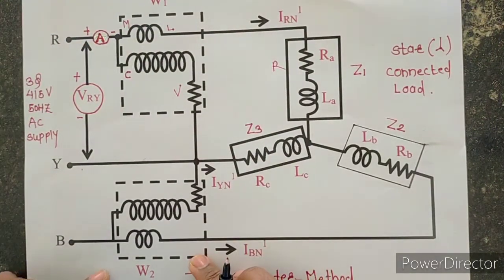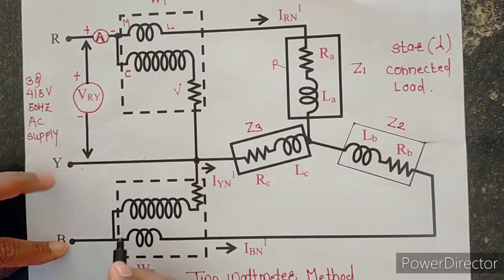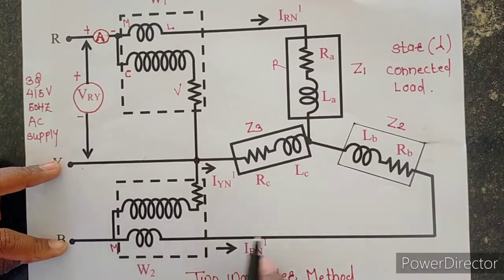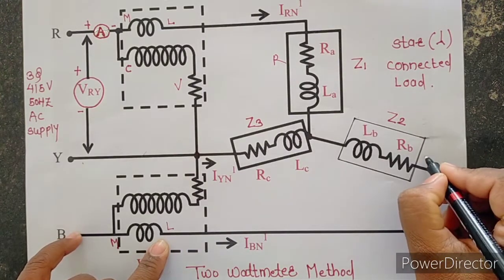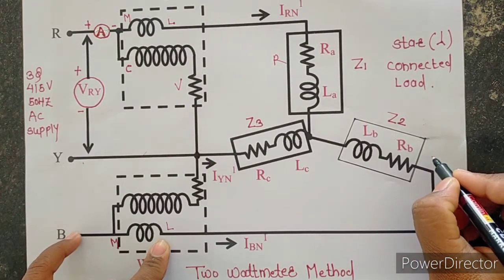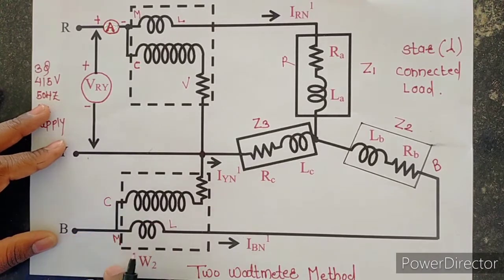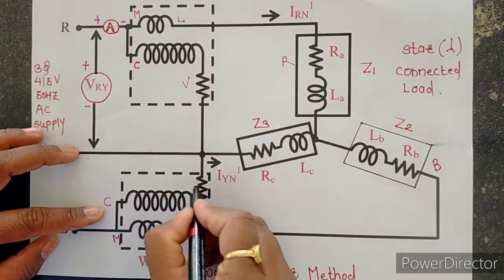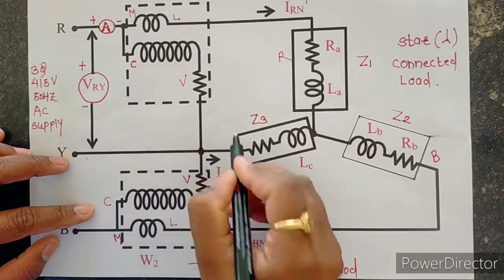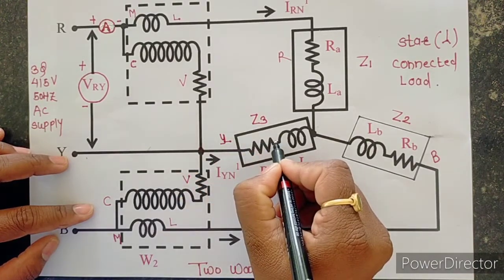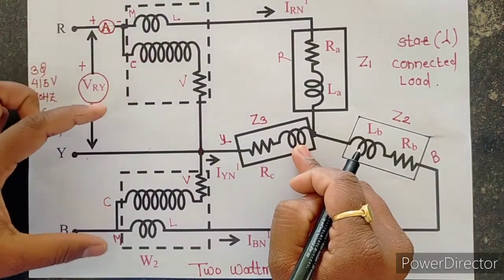Wattmeter 2 is connected in the B phase. The B phase is connected directly to the M terminal of wattmeter 2. The L terminal of the load is connected towards the B phase. Again, the M and C terminals are short-circuited, and the V terminal of the second wattmeter connects to the Y phase. The Y phase is connected to the load terminal of the Y phase. With respect to this load we have to take the readings of W1 and W2.